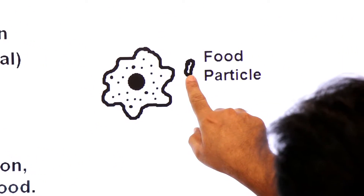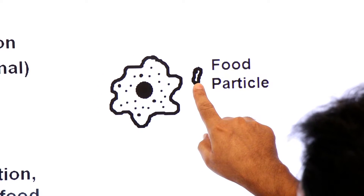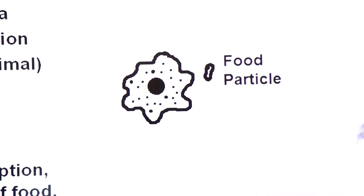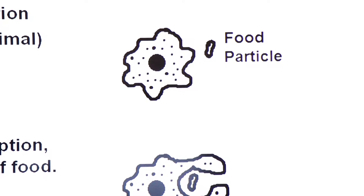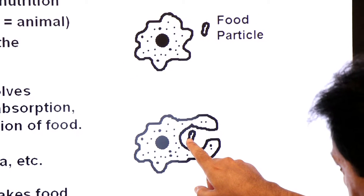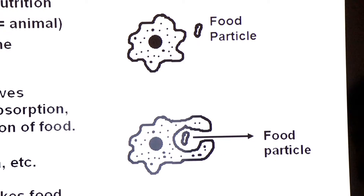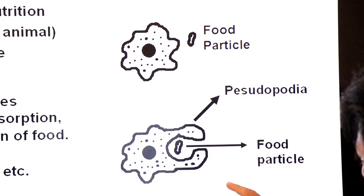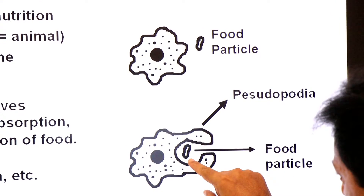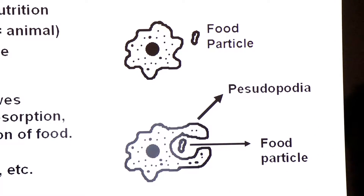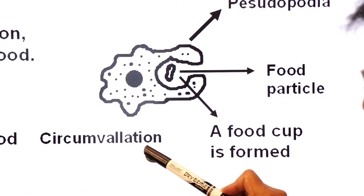The amoeba comes near its food. It then extends finger-like projections called pseudopodia to surround the prey. Here you can see the prey, and here you see the pseudopodia being extended in order to form a food cup. This process of forming a food cup around the prey is called circumvallation.